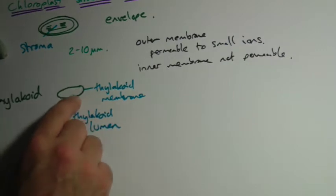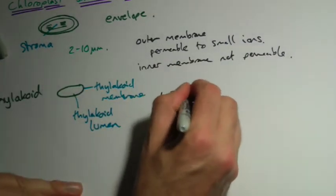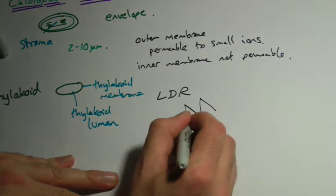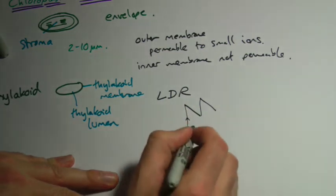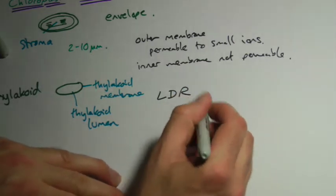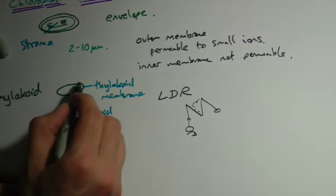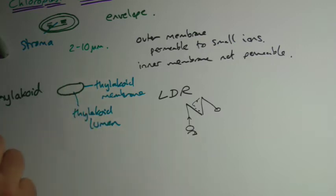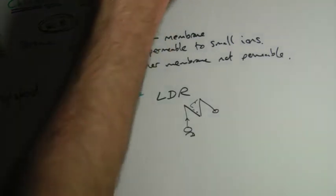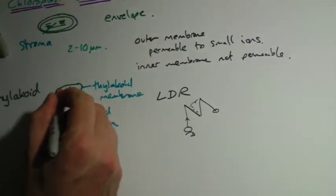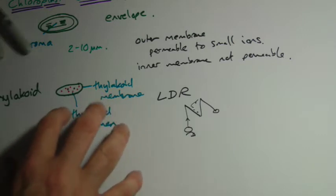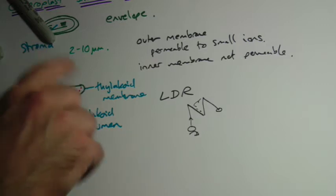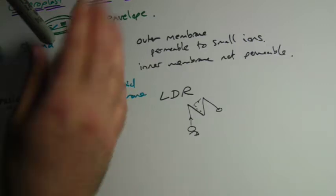Now the thylakoid membrane is the site where the light-dependent reaction is going to occur. The light-dependent reaction is basically the Z scheme, where we have photolysis of water and we send the electrons up, and we end up making, we have cyclic and non-cyclic. All that stuff is happening in this thylakoid membrane. And in fact what it does is it pumps hydrogen ions through into here. It's a little bit like, it's very like in aerobic respiration, where in the electron transport chain you pump hydrogens through into the space between the two membranes.